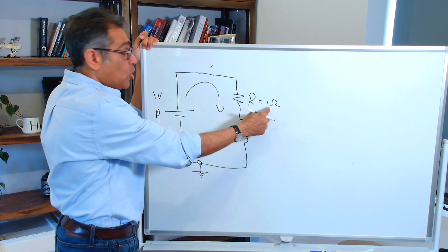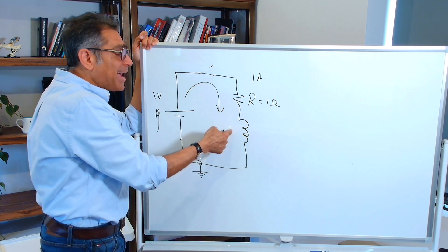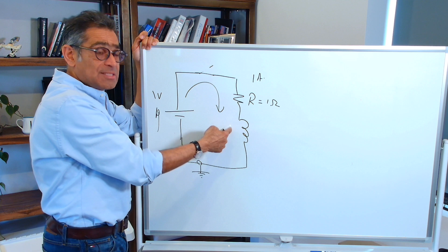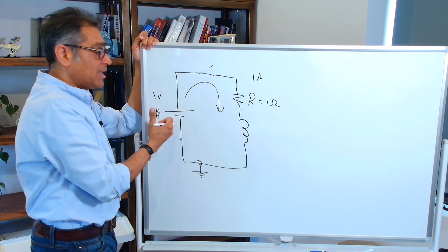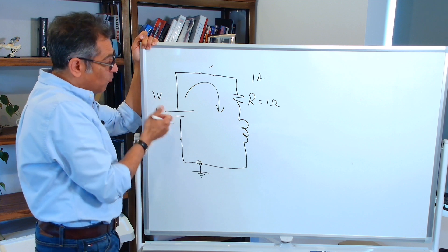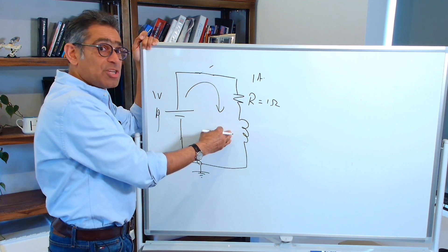In our case it's one ohm, one volt, so eventually the current is going to be one amp. Therefore a back EMF is formed across the two terminals of this inductor to oppose whatever is causing this change. In our case we've got one volt and therefore we've got a back EMF of one volt that will be generated here.